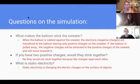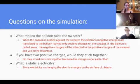Okay, so first we're going to talk about what makes the balloon stick to the sweater, like we just saw. So we saw that when the balloon was rubbed against the sweater, the electrons were actually transferred to the balloon, which left only positive charges on the fabric. And if it's pulled away, the negative charges are attracted to the positive charges and actually actively move towards it.